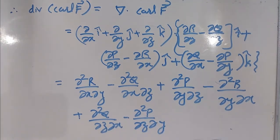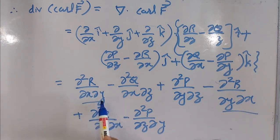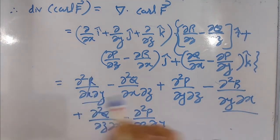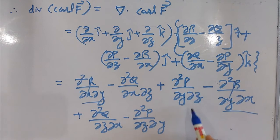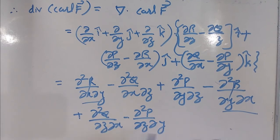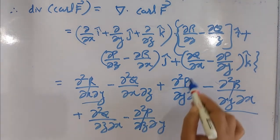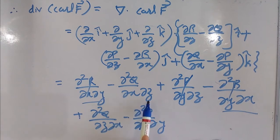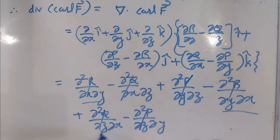The same items cancel each other out. For example, ∂²R/∂x∂y and ∂²R/∂y∂x are the same, so they cancel. Similarly, ∂²P/∂y∂z and −∂²P/∂z∂y cancel, and −∂²Q/∂x∂z and ∂²Q/∂x∂z cancel. Therefore all terms cancel and the result is zero.